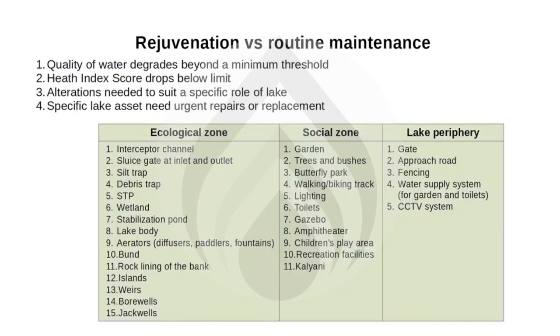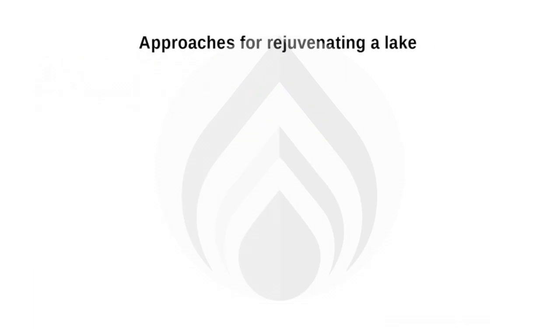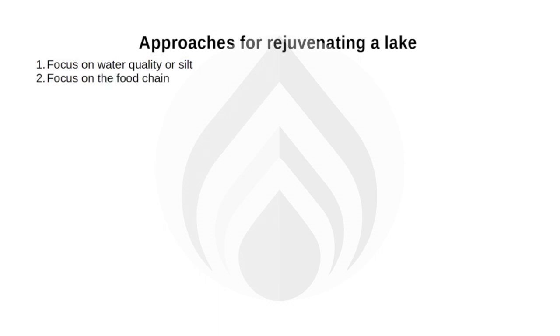Here is the master list of lake assets for reference. The rejuvenation project for a lake can have six different focus areas: first, improving the water quality or desilting of the lake; second, correcting the food chain or adjusting the littoral zone; third, creating a habitat for a specific target group of birds.